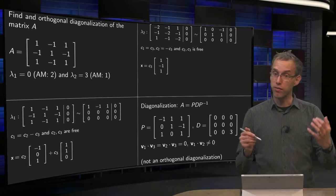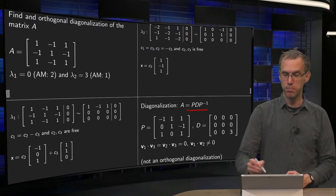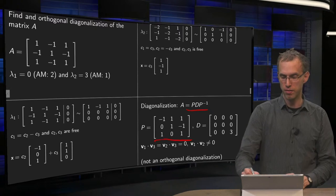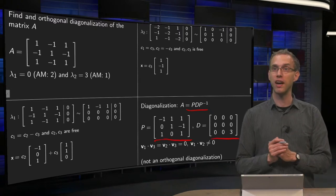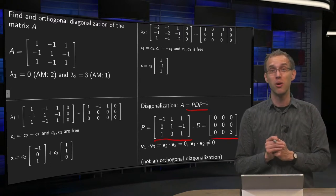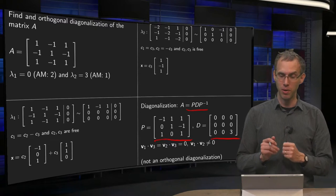So there we have our first diagonalization, A equals PDP inverse, with our P over here and our diagonal matrix over there. However, is this an orthogonal diagonalization? Well, let's take a look.